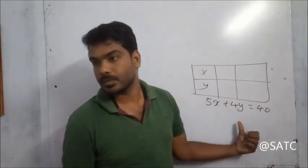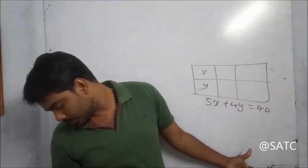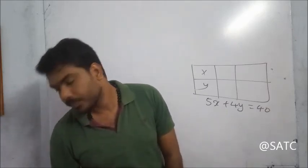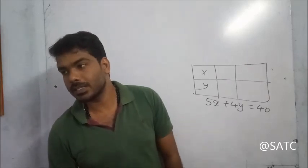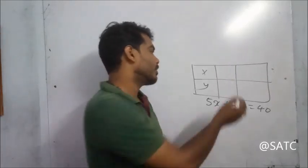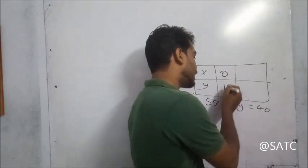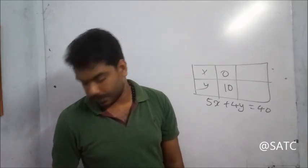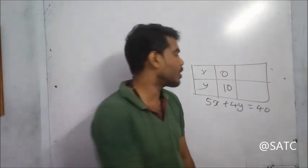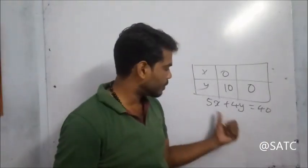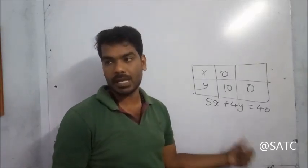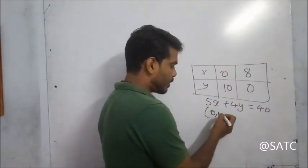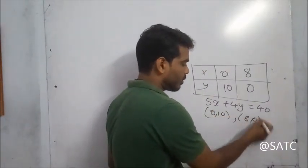For 5x plus 4y equal to 40: when x is equal to 0, 4y equals 40, so y equals 10, giving point (0, 10). When y is equal to 0, 5x equals 40, so x equals 8, giving point (8, 0). These are the corner points for this line.